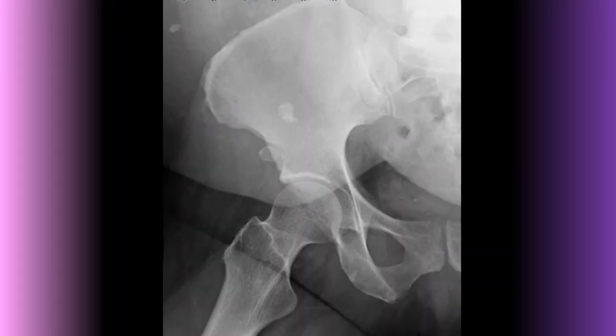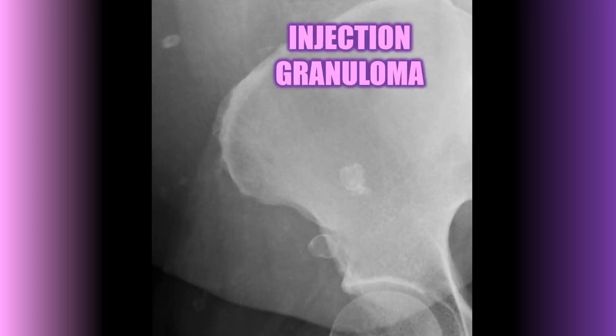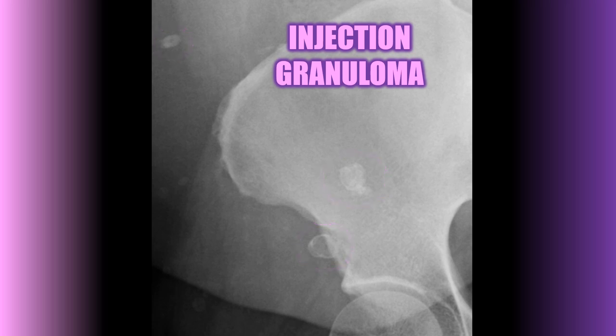Here is a frontal view of the hip/pelvis showing multiple calcified lesions overlying and adjacent to the ileum. These calcifications represent injection granulomas, which are the most common calcification in the soft tissues of the gluteal region. Intramuscular injections can lead to fat necrosis and dystrophic calcification, resulting in a radiographically visible granuloma.